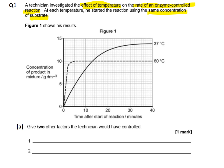If we start to look at the graph itself, the first thing you should do is look at the labels. The y-axis represents the concentration of product in grams per decimetre cubed — that's just grams per litre. On the x-axis along the bottom is the time after the start of the reaction in minutes.